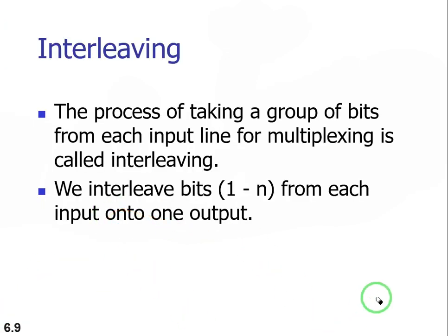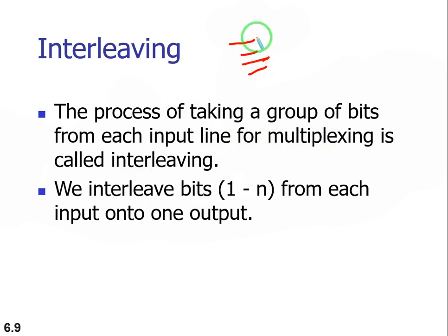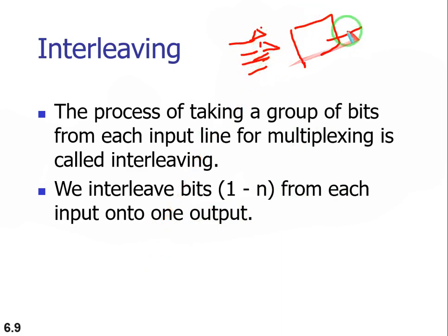Coming to the interleaving concept: the process of taking a group of bits from each input line for multiplexing is called interleaving. With one, two, three, four inputs, a group of bits is taken from each input and then multiplexed. We interleave bits one through n from each input onto one output — this is interleaving.